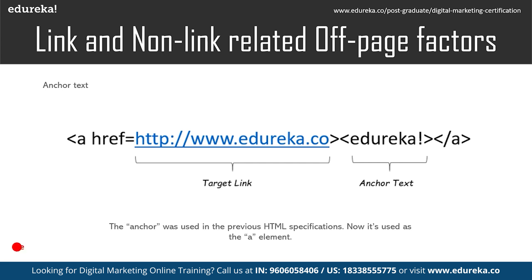Anchor tags look something like what's shown on screen. Anchor text is used by search engines to reflect how your audience views your website. The anchor element was used in previous HTML specifications and is still in use today. You can see anchor text in blogs — if you look closely, topics listed at the beginning of a blog link to the position where that topic starts on the page. Links in articles help you navigate to another web page or site — these are called anchor tags or anchor text.